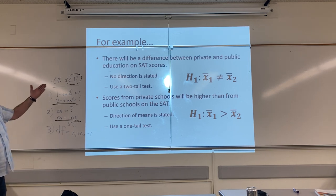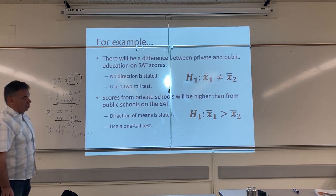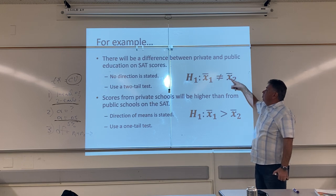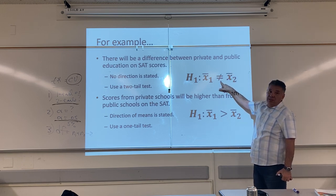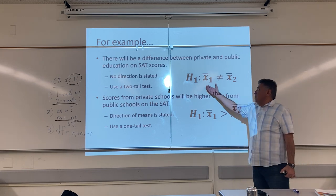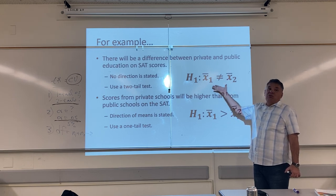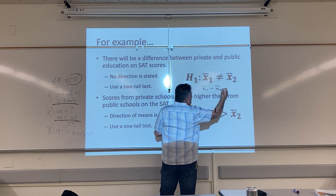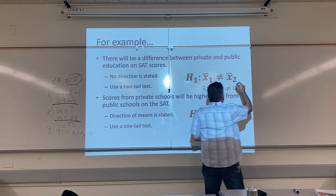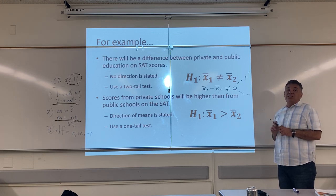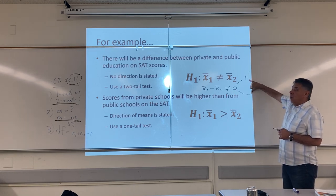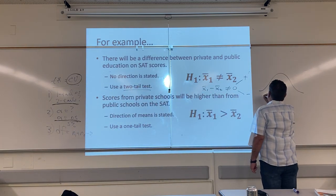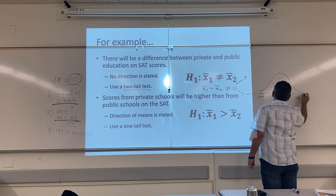For example: there will be a difference between private and public education on SAT scores. So what's my research hypothesis? The average score for the first group — private schools — and the average score for the second group — public schools — are different. I'm not telling you who's bigger or better. So we don't know the direction of the difference; the only thing we know is that when I subtract one from the other, the answer can't be zero. The answer can be positive or negative — it just can't be zero. That means I need to do a two-tail test.